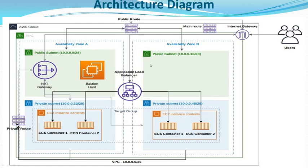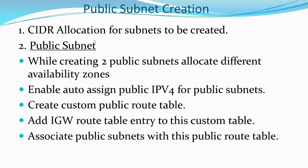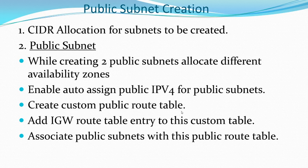We are going to do CIDR allocation for the subnets to be created as part of our VPC. The two public subnets will be created in two different availability zones. Once the public subnets are created, we are going to enable auto-assign public IPv4 addresses, because for public subnets we require IP addresses to communicate from the internet. Then we are going to create our custom public route table with entries for the internet gateway, and associate our public subnets with this public route table.